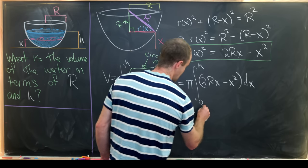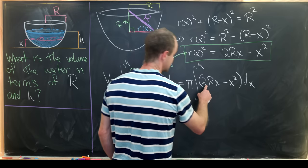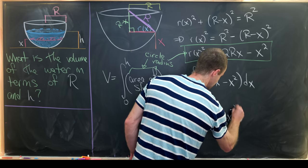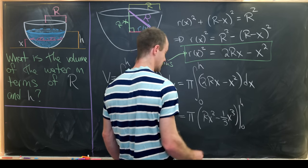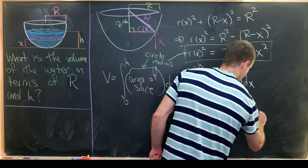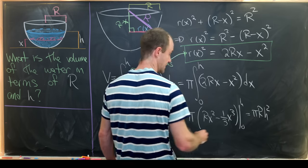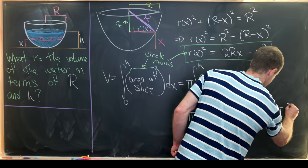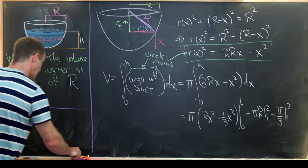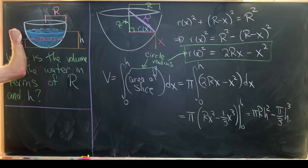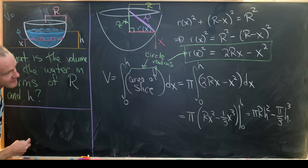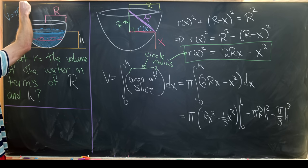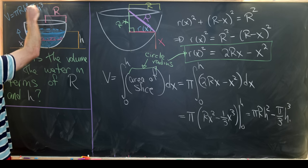So this will give us π times, let's see, integrating this will give us Rx squared minus 1/3 x cubed, we need to evaluate that from 0 to h. So in the end, we'll have πRh² minus π/3 h³. And that's the volume of this region right here. So our volume has been calculated: πRh² minus π/3 h³.